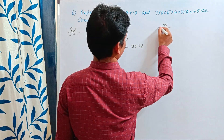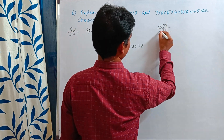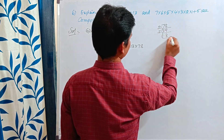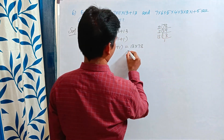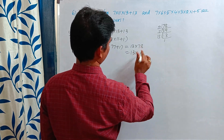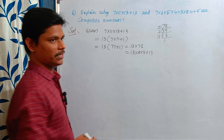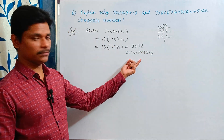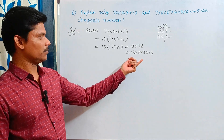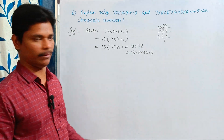So, what are the factors of 78? 2, 3, 6, and 13. So it can be written as 13 × 2 × 3 × 13. The given number can be written as a product of two numbers except 1 and itself. So then only it is a composite number.